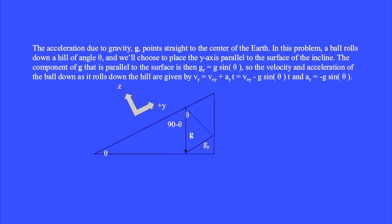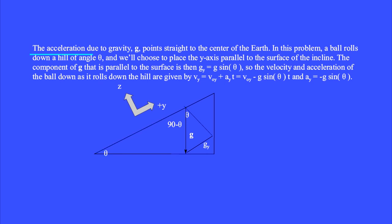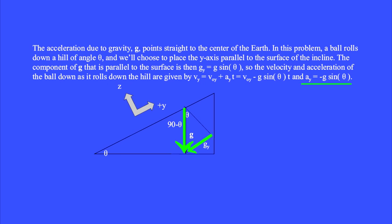Next we look at acceleration on an inclined plane. This is a hill tilted by angle theta. The acceleration due to gravity, g, points straight to the center of the earth. In this problem, a pinball rolls down a hill of angle theta. We choose to place the y-axis parallel to the surface of the incline. We need the component of the vector g, g sub y, that is parallel to the y-axis along the surface of the inclined plane.